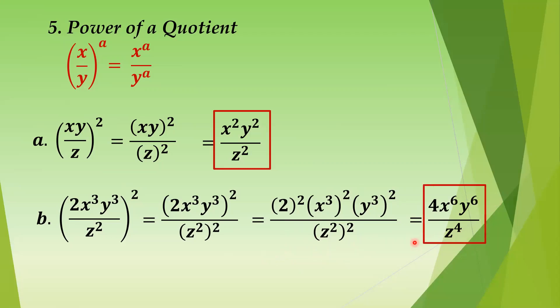So those are the five properties — laws of exponents — that you need to remember. Don't mix them up. They are needed in multiplication and division of polynomials, as well as in special products and factoring.